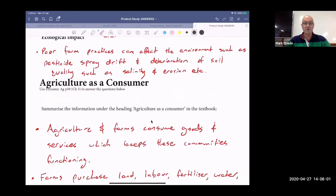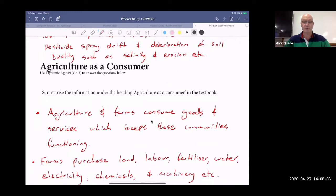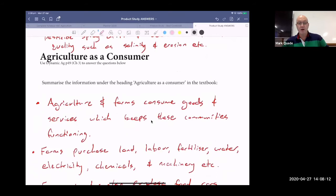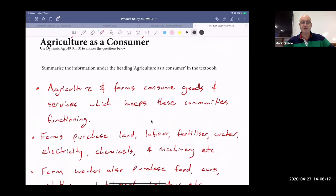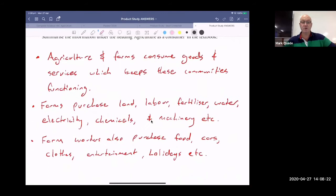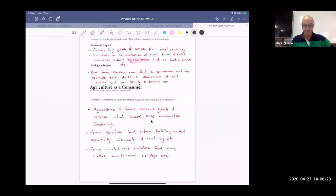Agriculture as a consumer. Consumer, people like you and I, we're buying agricultural produce to eat, food and fibre. Agriculture and farms consume goods and services which keeps these communities functioning. Farms purchase land, labour, fertiliser, water, electricity, chemicals and machinery. Farm workers also purchase food, cars, clothes, entertainment, holidays, et cetera.